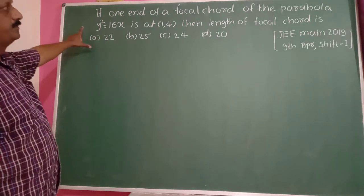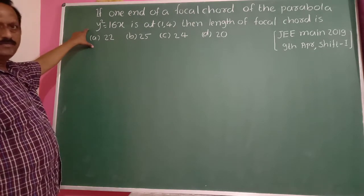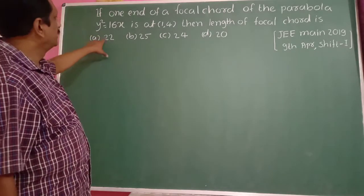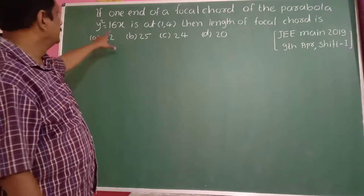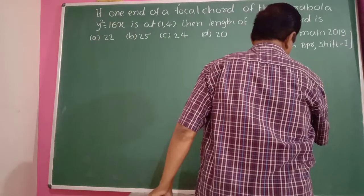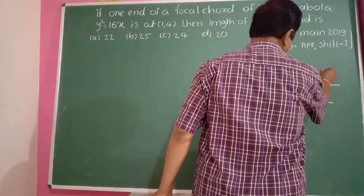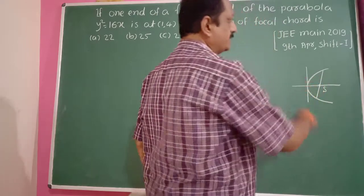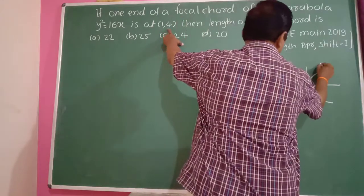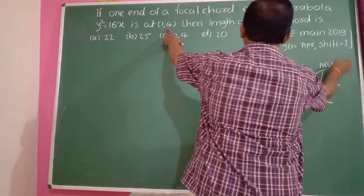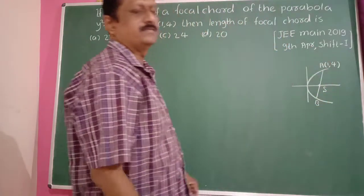Next problem: if one end of a focal chord of the parabola y² = 16x is at (1, 4), then the length of the focal chord is — options: 22, 25, 24, 20. This is a focal chord, meaning a chord passing through the focus. Consider the given point (1, 4) as one end. Find the length of the focal chord.